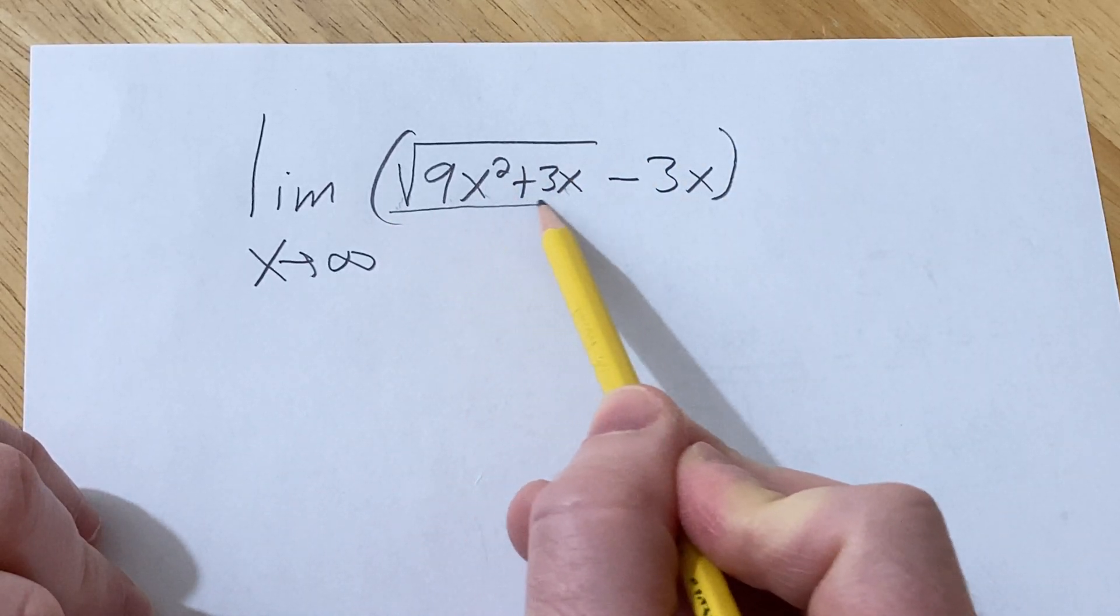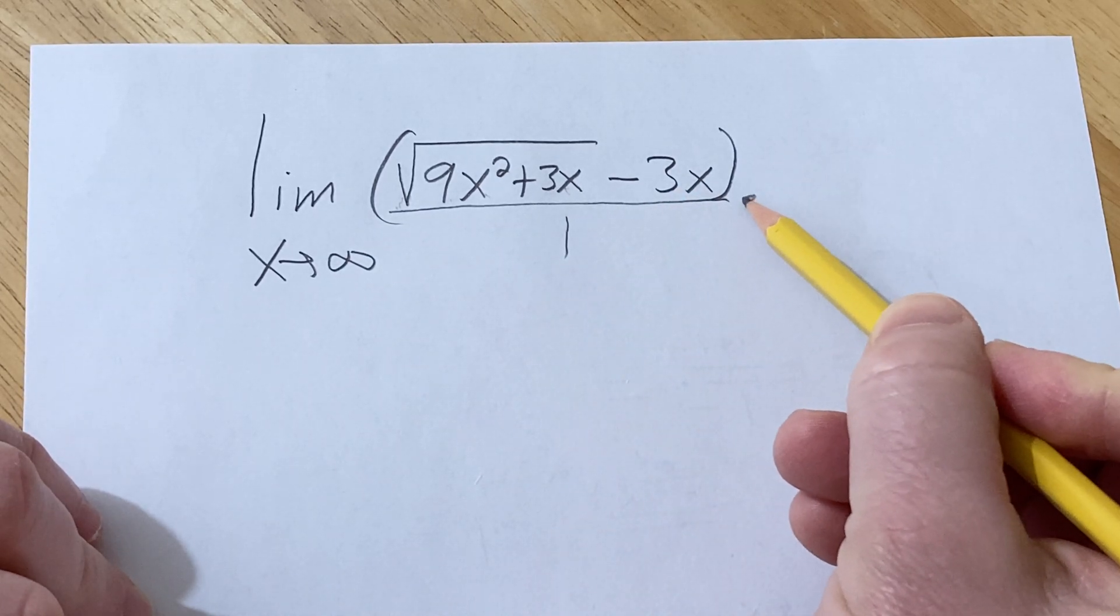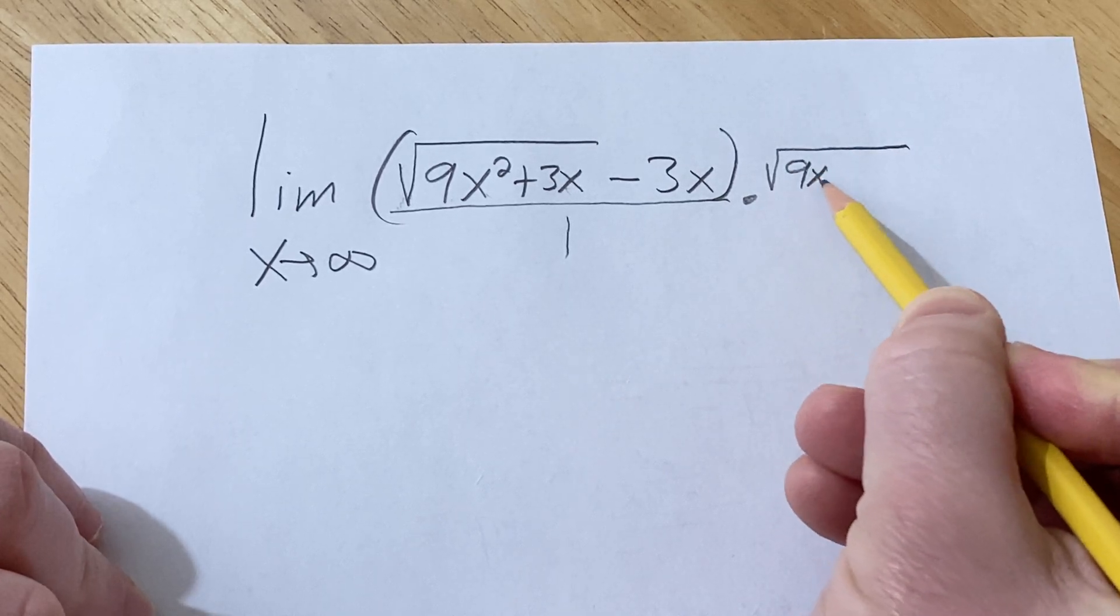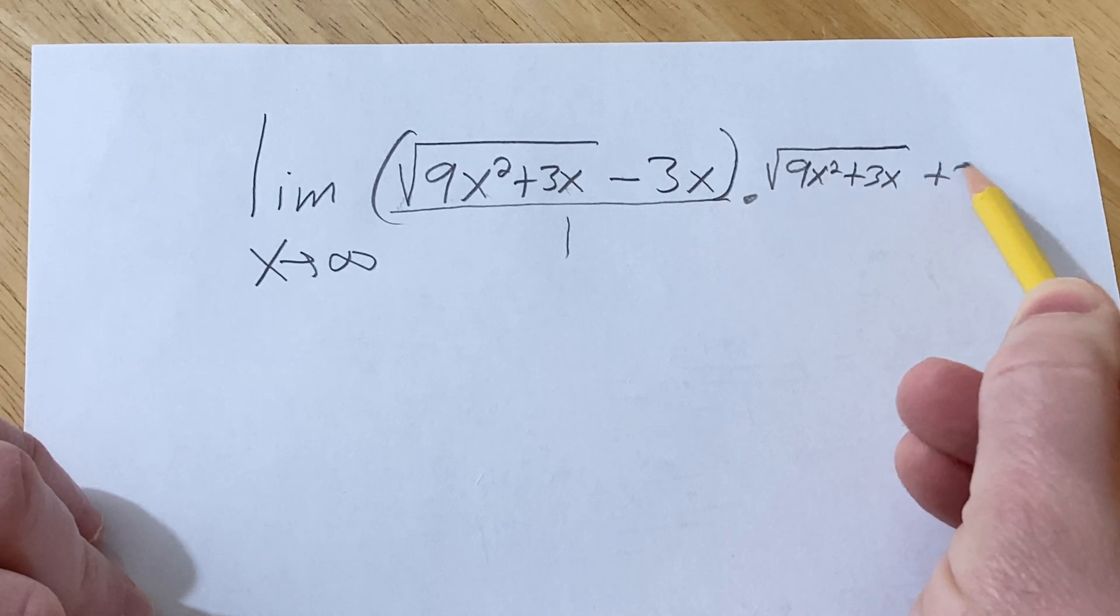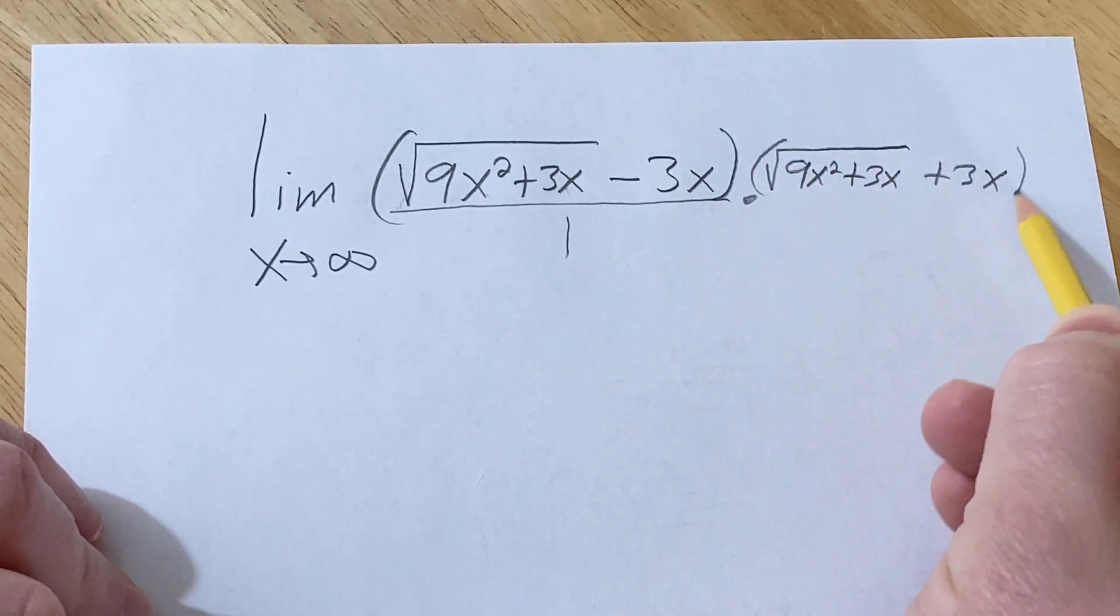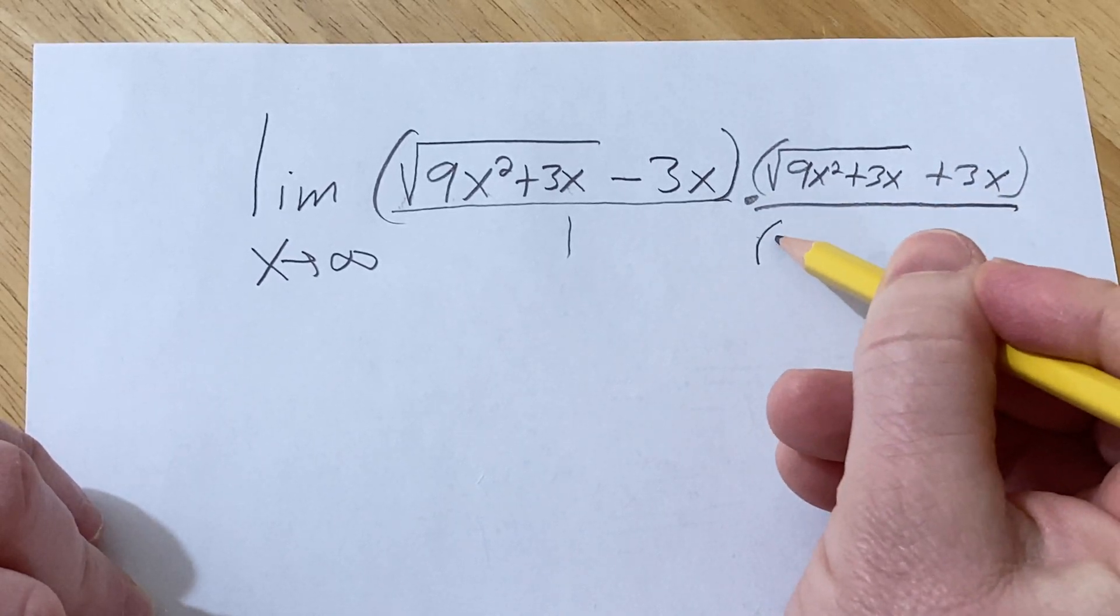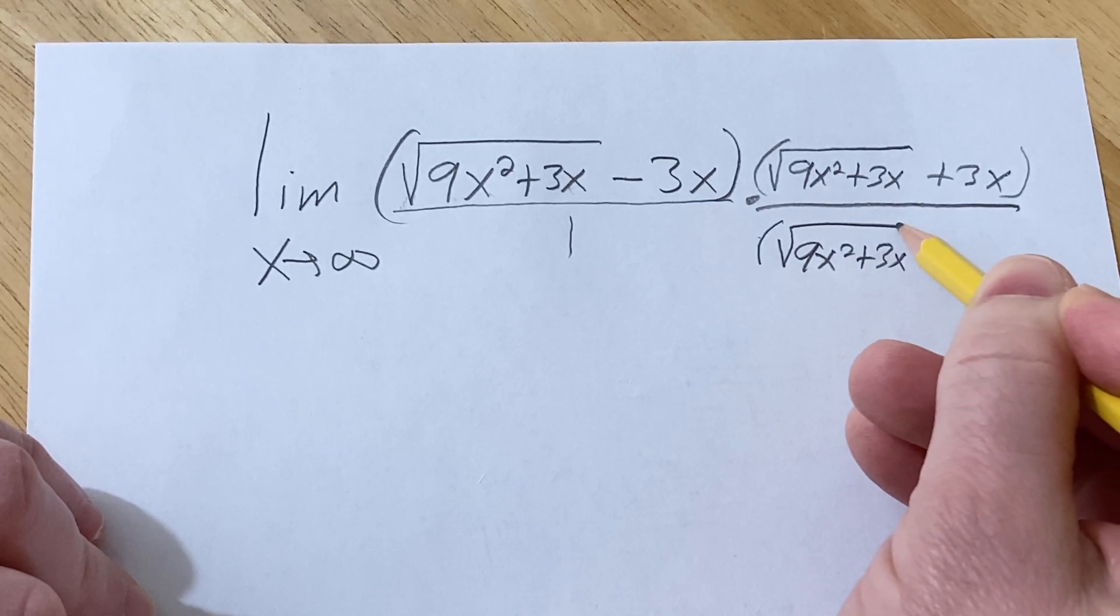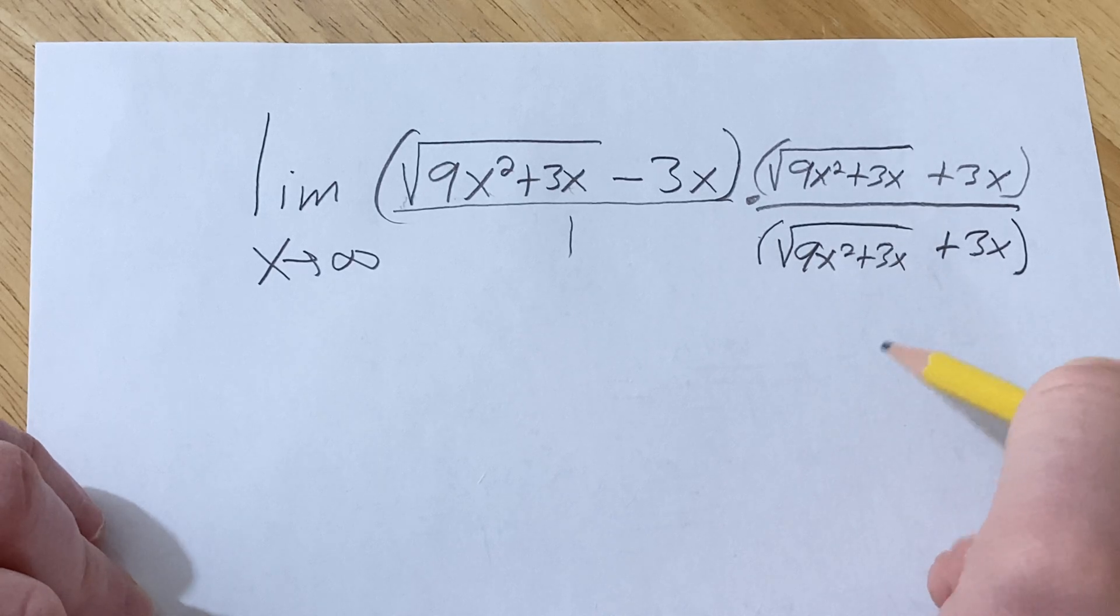So you want to think of this as something over 1, and so now what we're going to do is multiply by the following. This is the square root of 9x squared plus 3x, and then we just change the sign plus 3x. And then we do the same thing here, because basically we're multiplying by 1. So this is parentheses square root 9x squared plus 3x plus 3x, just like that.